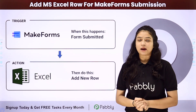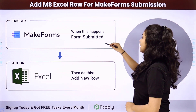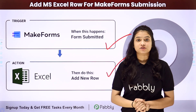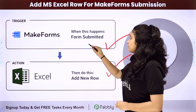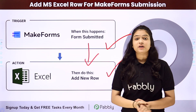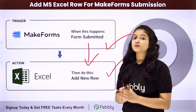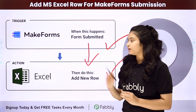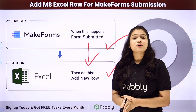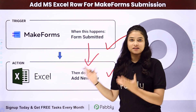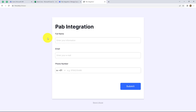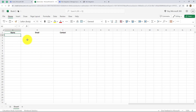We are going to use an integration software called Pabbly Connect. We have Make Forms in our trigger and MS Excel in our action. We will be connecting both of them using Pabbly Connect in such a way that whenever a new form is submitted in Make Forms, automatically it will be captured in the Excel sheet by adding a new row. So in order to learn the entire process step by step, let me take you to my screen.